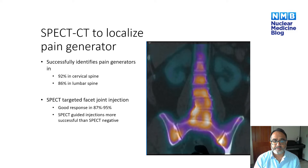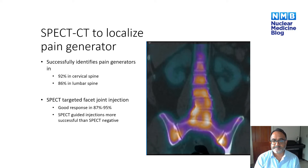SPECT CT is well known to identify pain generators in the lumbar spine. A study done by colleagues at the Royal Free has shown that SPECT CT has been successful in identifying pain generators in 92% of patients in the cervical spine and 86% in the lumbar spine. SPECT can also be used to target facet joint injections, with studies showing 87 to 95% successful targeting with SPECT-guided injections, and SPECT-guided injections are more successful than those that are SPECT negative on bone scans.